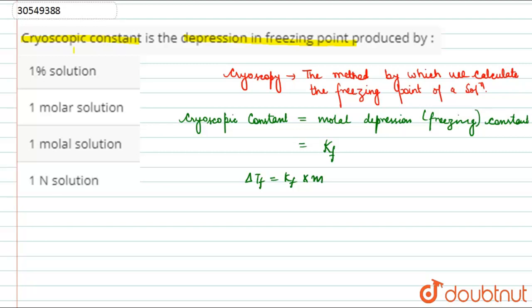So cryoscopic constant will be equal to depression in freezing point for when m is equal to 1. So when the molality of the solution will be 1 molar. For 1 molar solution, cryoscopic constant will be equal to the depression in freezing point. So answer here will be option c.